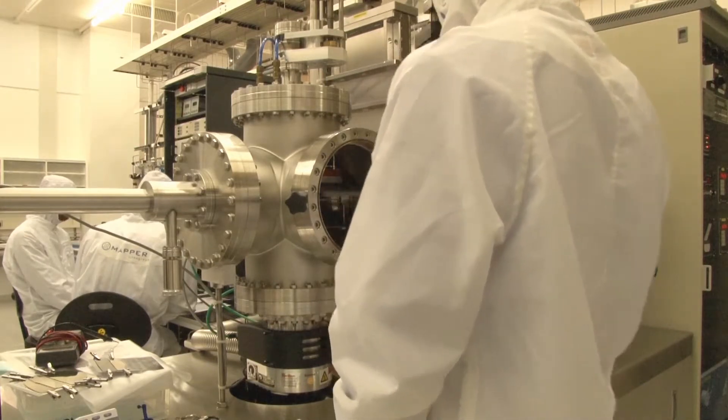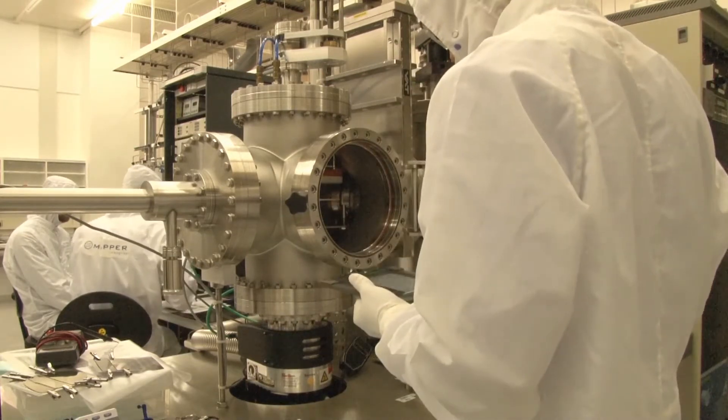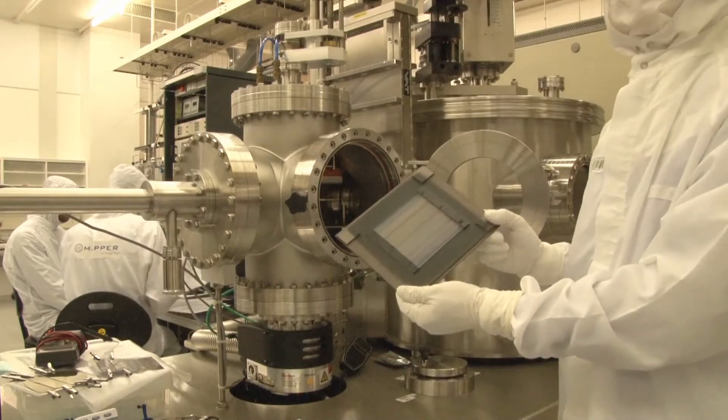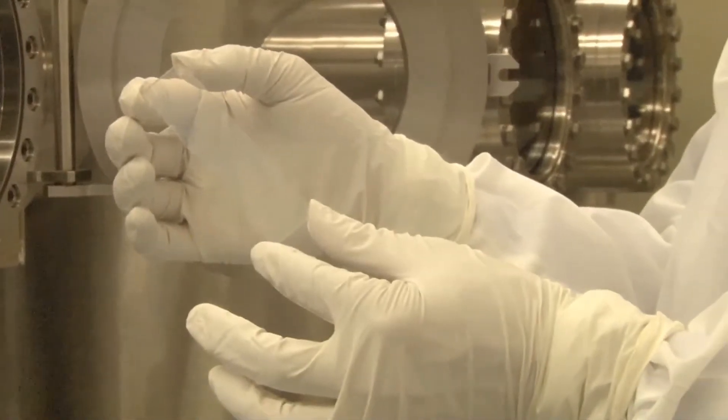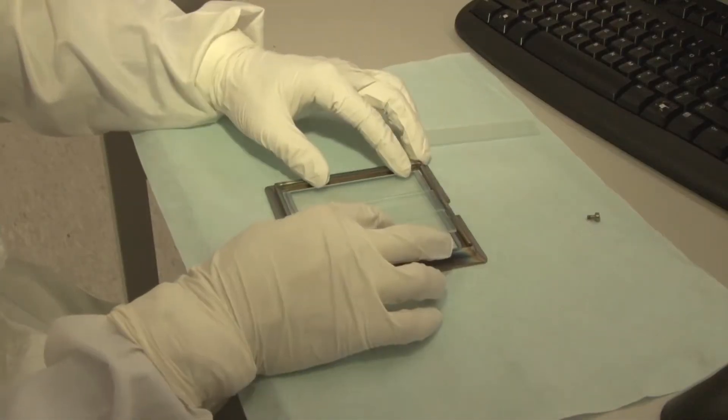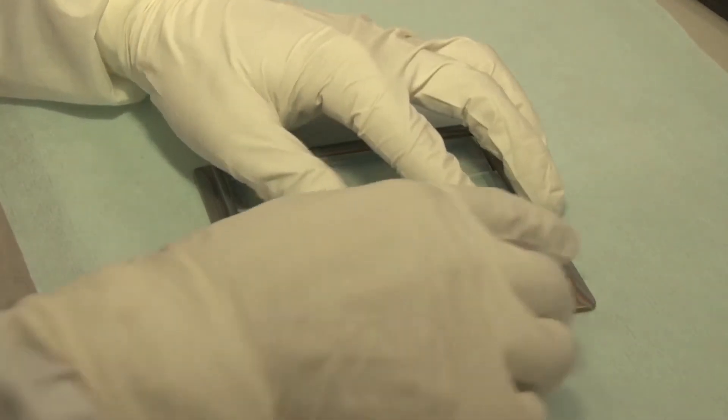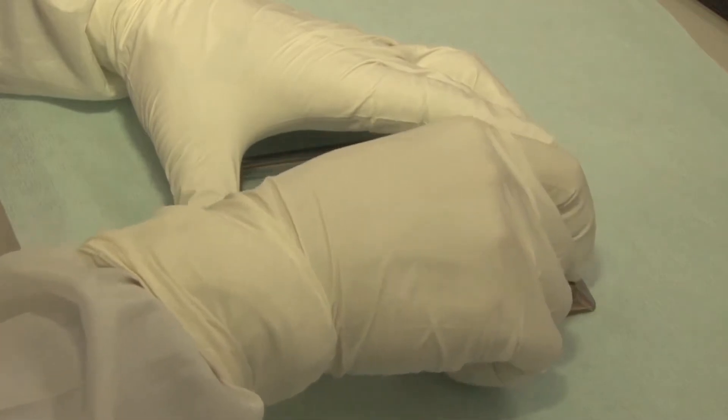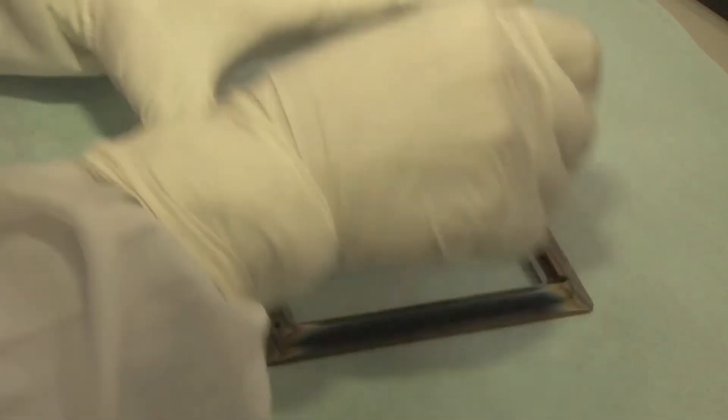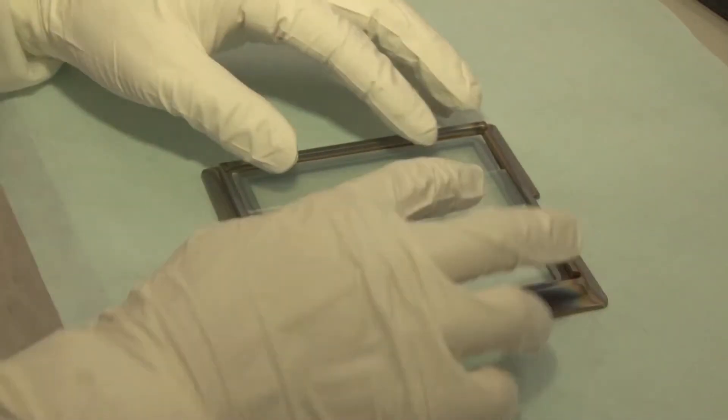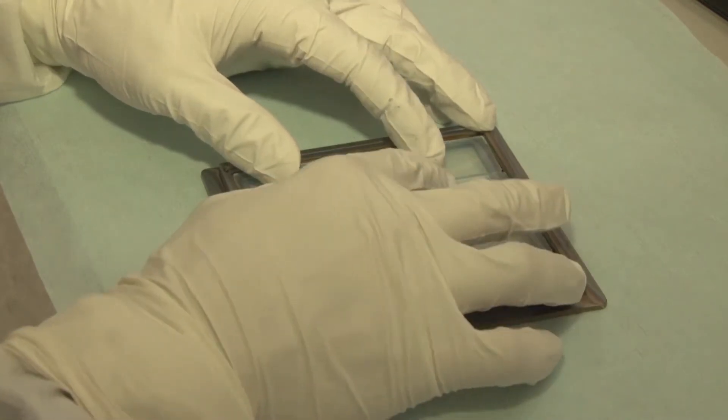After the sputtering processing step we have a glass plate with a tin oxide with on top a very thin zinc oxide layer. Next, the samples are mounted into a different substrate holder. This substrate holder is used during the plasma-enhanced chemical vapor deposition step, PECVD step, to deposit the various thin silicon films.